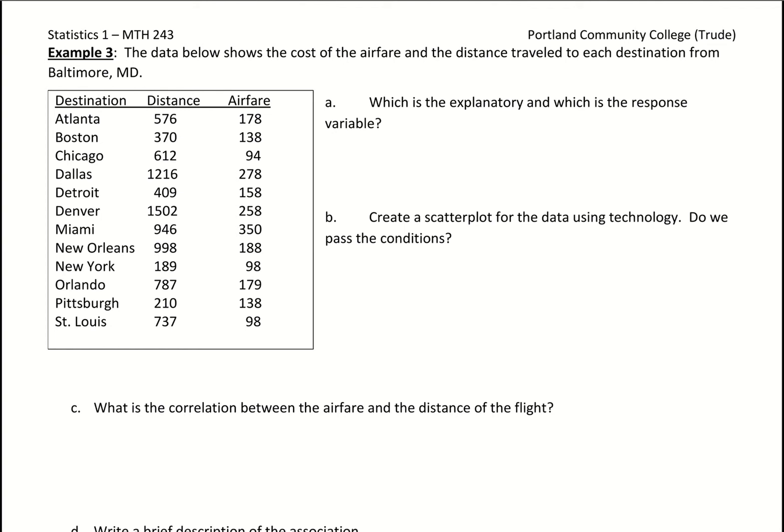Let's go through an example start to finish with new data and evaluating correlation and this coefficient of determination. So what we have here is data for airfare and distance when traveling away from Baltimore, Maryland.